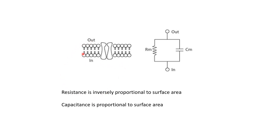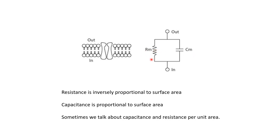Sometimes we can consider that the neuronal membrane is uniform throughout. In that case, we can talk of the resistance per unit area and capacitance per unit area, so Rm and Cm values can refer to the capacitance and resistance values per unit area of the membrane.